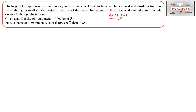The question states: the height of a liquid metal column in a cylindrical vessel is 3.2 meters. At time t = 0, the liquid metal is drained out from the vessel through a small nozzle located at the base of the vessel. Neglecting frictional losses, we need to find the initial mass flow rate in kilograms per second through the nozzle.